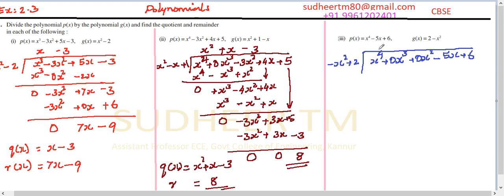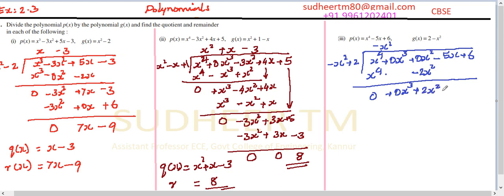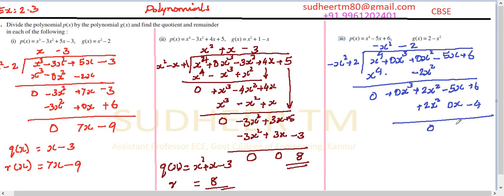x⁴ divided by minus x² gives minus x². Multiply: minus x² into minus x² is x⁴, and minus x² into plus 2 is minus 2x² — write this under the x² term. Subtract: 0x³ remains 0, and 0 minus minus 2 gives 2x². Put back minus 5x. Then 2x² divided by minus x² gives minus 2. Multiply: minus 2 into minus x² is 2x², and minus 2 into plus 2 is minus 4, with 0x. Subtract: 2x² minus 2x² is 0, and minus 5x remains, and 6 minus minus 4 is plus 10.